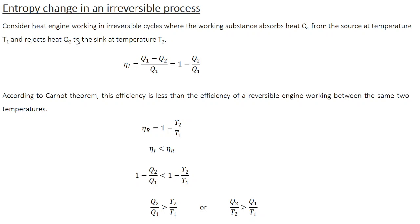Consider a heat engine working in irreversible cycles where the working substance absorbs heat Q1 from the source at temperature T1 and rejects heat Q2 to the sink at temperature T2. The efficiency of the irreversible heat engine, eta_I, is given by work done Q1 minus Q2 divided by heat absorbed Q1, which is 1 minus Q2 divided by Q1.